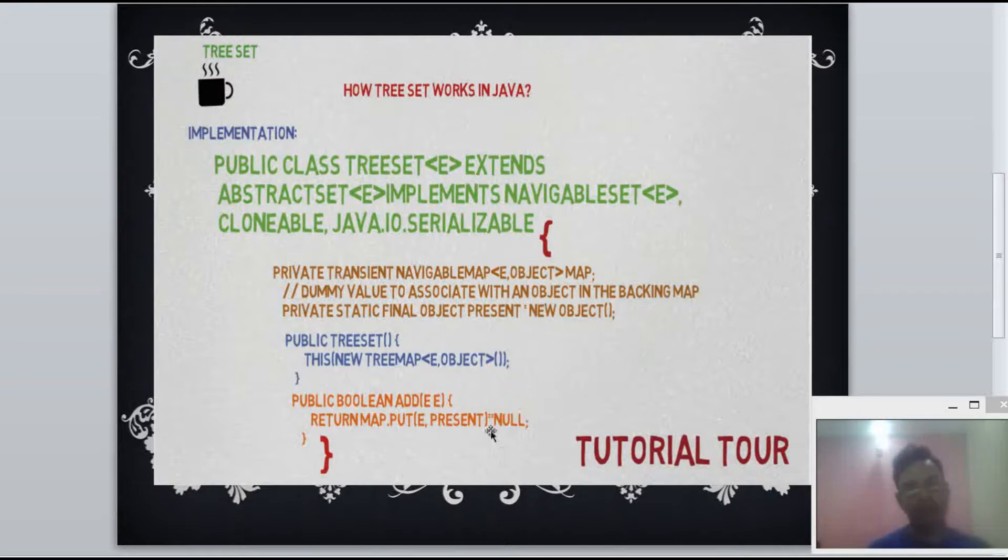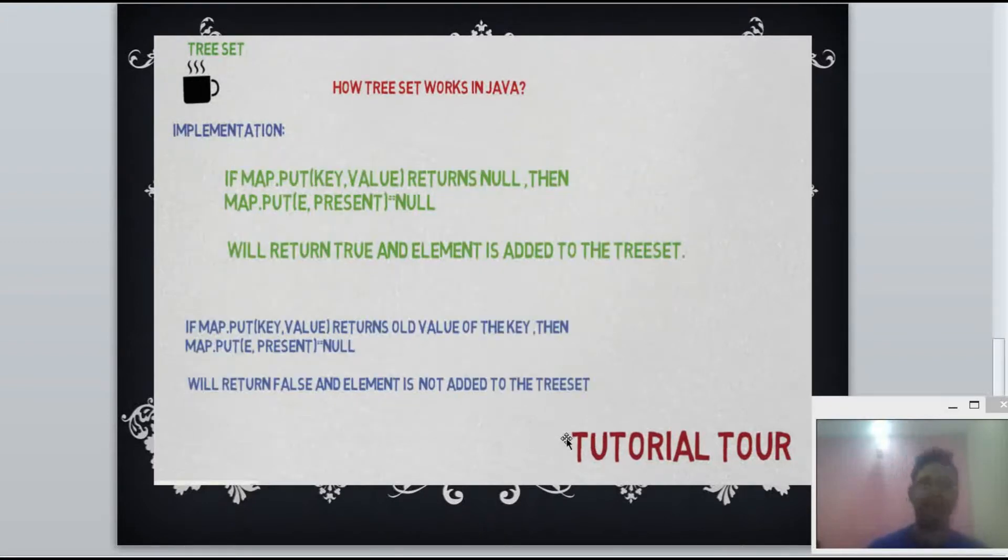So what Java API does, which is referred here as present - if add method returned false then it means element is duplicate and it will not be added. If it returns true, it means element is unique and it will get added to TreeSet.